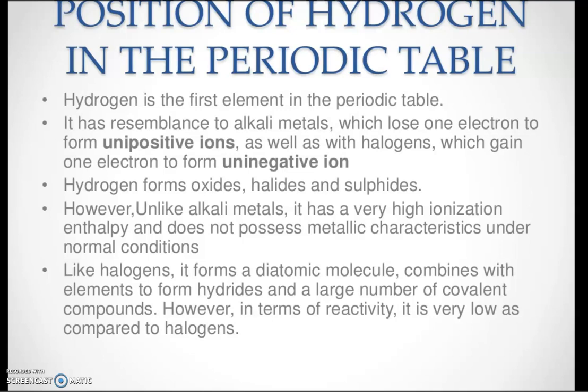So hydrogen has both the properties of alkali metals and halogens. It forms oxides, halides, and sulfides. Unlike alkali metals, it has very high ionization energy and is not metallic in nature. Like halogens, it forms diatomic molecules, combines with elements to form hydrides, and forms a large number of covalent compounds. Compared to halogens, however, it has very low reactivity.